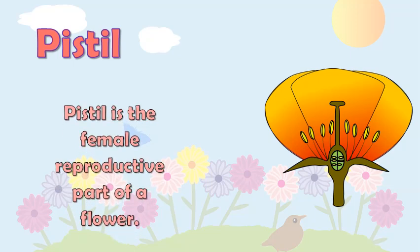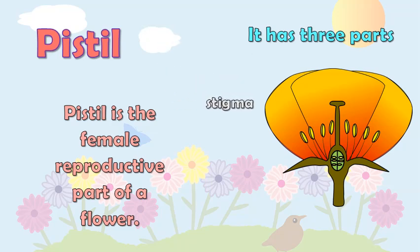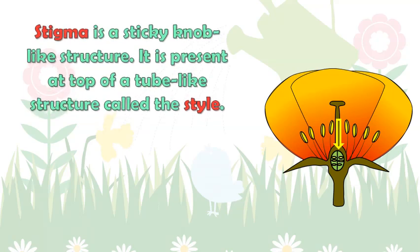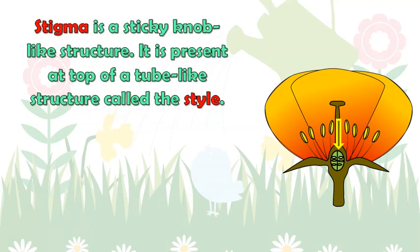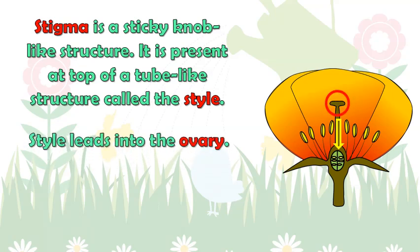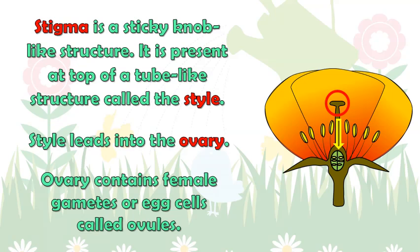Pistil is the female reproductive part of a flower. It has three parts: stigma, style, and ovary. Stigma is a sticky knob-like structure present at the top of a tube-like structure called the style. The style leads into the ovary. The ovary contains female gametes or egg cells called ovules.